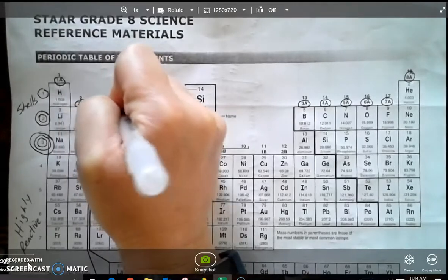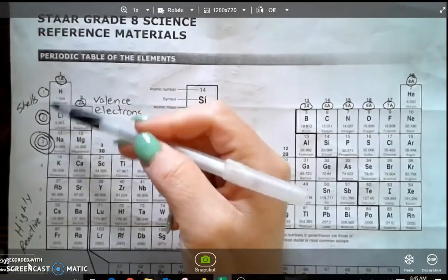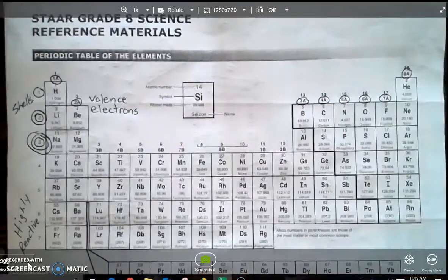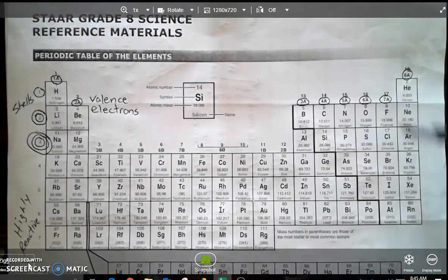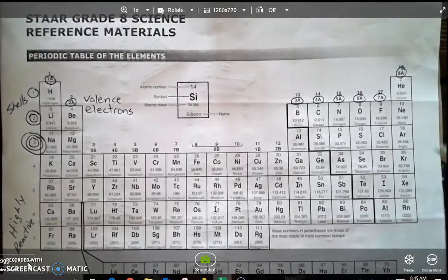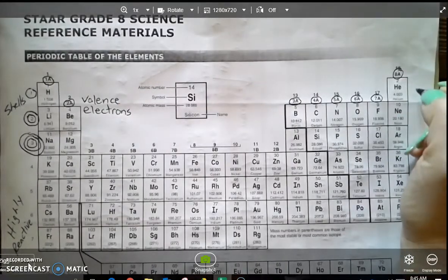Now, valence electrons tells us the reactivity. So again, one valence electron, very reactive. Two valence electrons, not so much. We have 3, 4, 5, and then 8, once again, not so much. So as we go closer to that 8 full, we become least reactive.